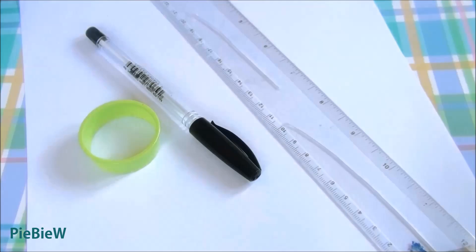First we're going to need a paper, a pen, a ruler, and a circle cookie cutter.